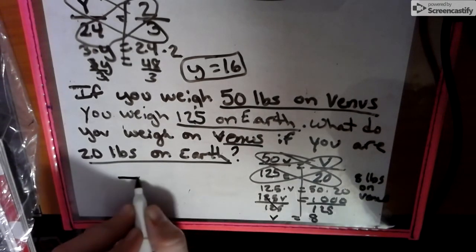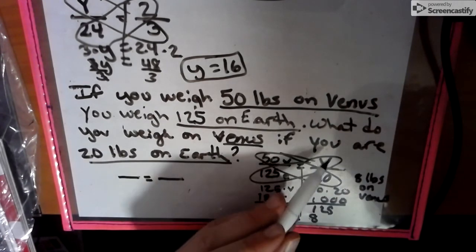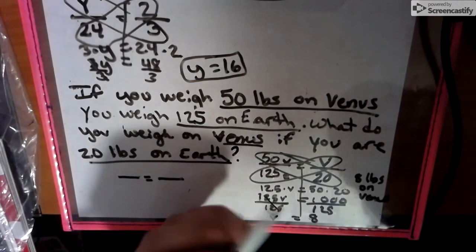Some kids set up proportions differently, and it still means the same thing. Notice how I did Venus, Earth, Venus, Earth. Okay. I kept a pattern. Some kids do Earth.